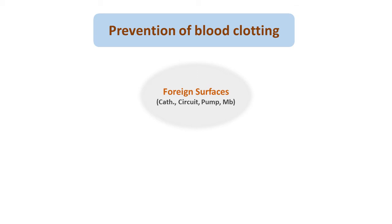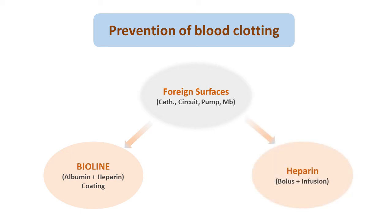As you saw, blood trip inside the ECMO circuit is too long and too many parts are present — all are foreign surfaces, so blood is subjected to clotting. To address this, all circuits from inside are covered by Bioline, which is an albumin-heparin coating. Additionally, we control clotting by giving heparin infusion and bolus from outside.